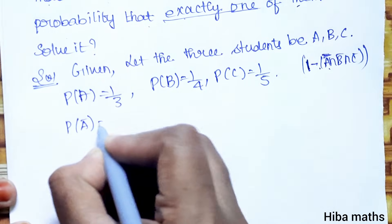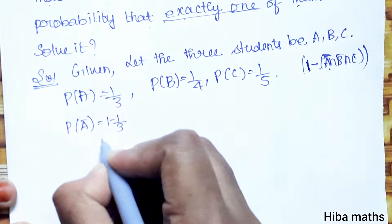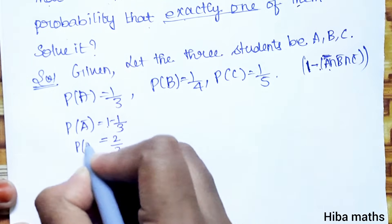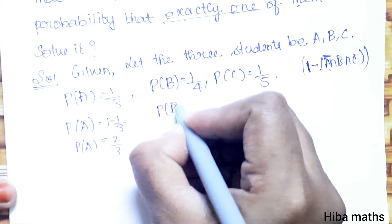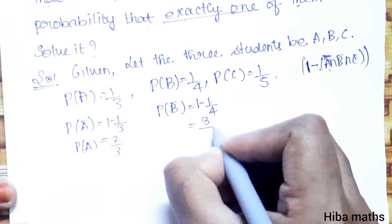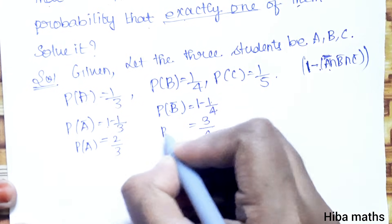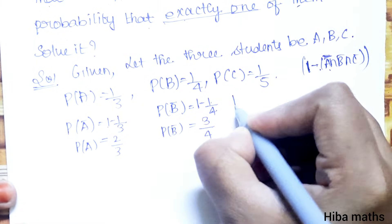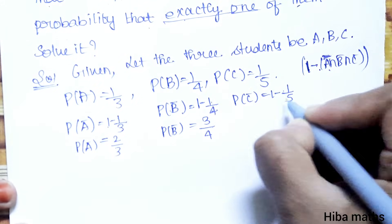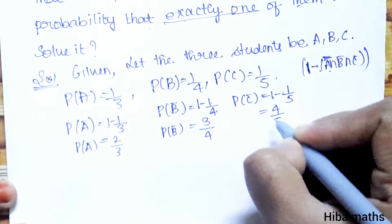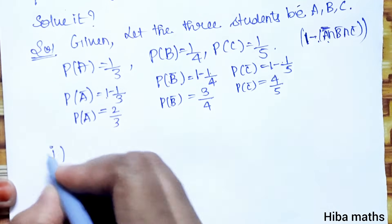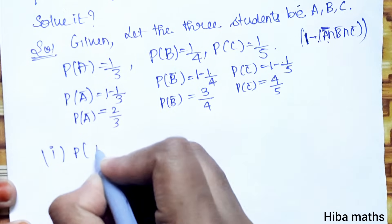P of A bar: 1 minus 1 by 3 equals 2 by 3. That is P of A bar. P of B bar: 1 minus 1 by 4 equals 3 by 4. P of C bar: 1 minus 1 by 5 equals 4 by 5. That is P of C bar.